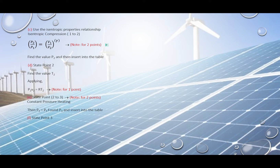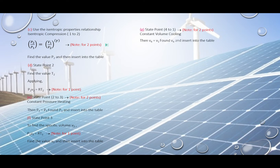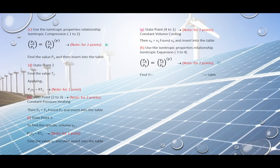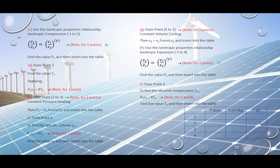P2 equals P3 because that is the constant pressure process. Using the ideal gas law again, you can find v3. Since volume v1 and v4 are the same, you can equate them at point g. Then use the isentropic relationship to find P4, add it to the table, and finally find point i. These steps guide you through finding a through i.